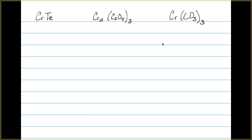Because chromium has many different oxidation states that it can have. In the first compound, we've got the chromium and tellurium ions. The tellurium is going to have a 2 negative oxidation state. And there's only one of them.